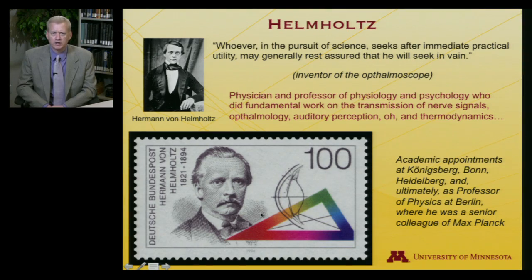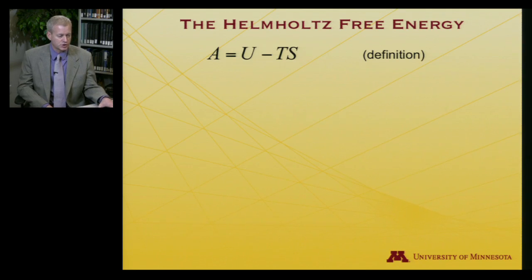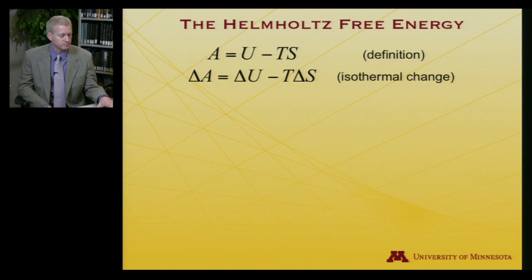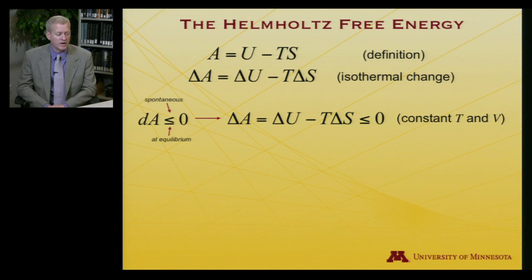Returning to our state function: the Helmholtz free energy is defined as A equals U minus TS. For an isothermal change — one where temperature is held constant — we have ΔA equals ΔU minus T ΔS. The condition for spontaneity is ΔA less than or equal to zero, or equivalently ΔU minus T ΔS less than or equal to zero, under constant temperature and volume conditions.